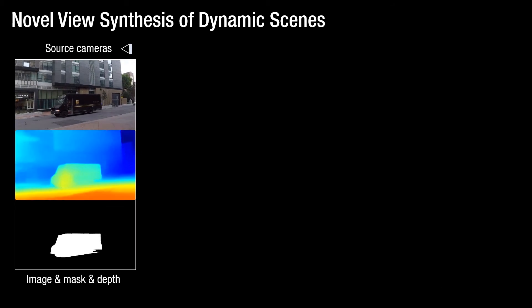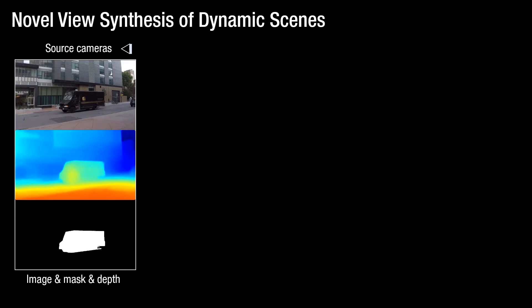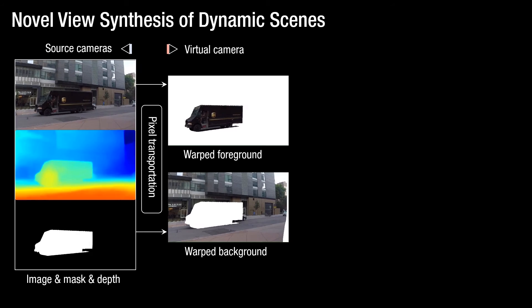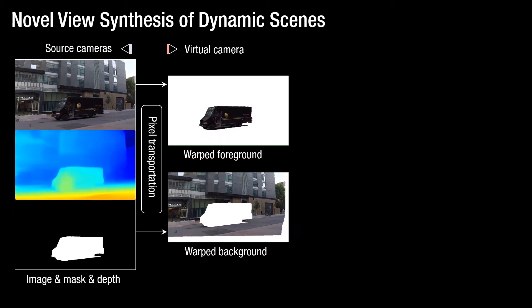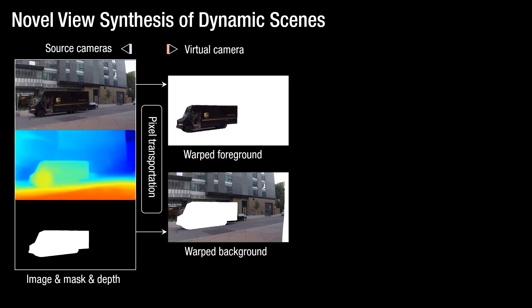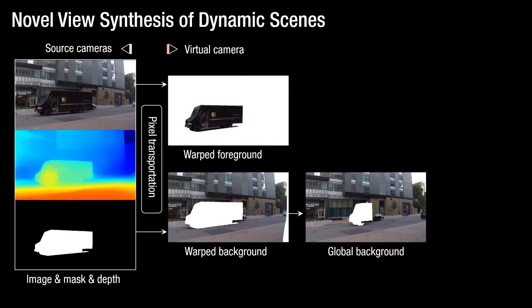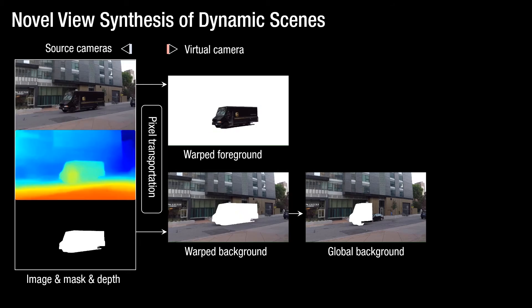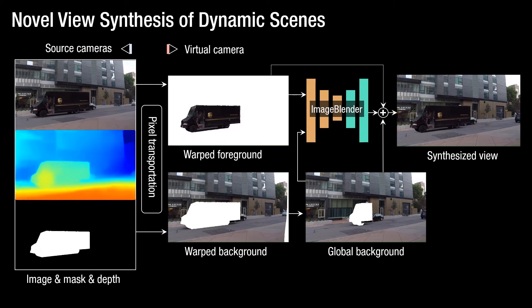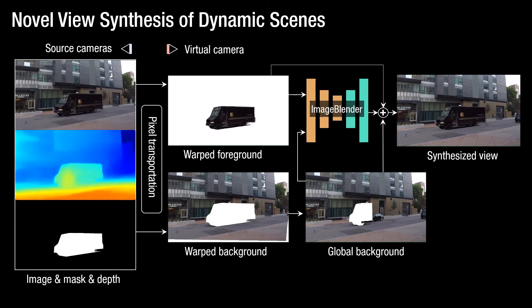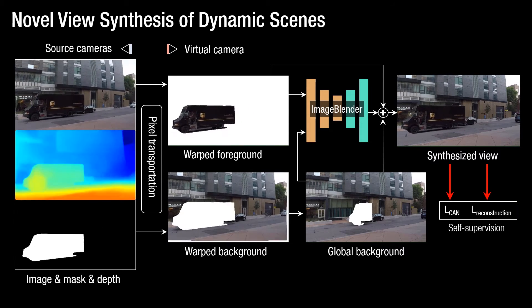Given images, depth maps, and foreground masks, we synthesize a photorealistic virtual view at a specific location and time. We transport the pixels from source cameras to the virtual view by separately warping the foreground and background. The global background is reconstructed by merging the background pixels from all views based on the camera baseline. Finally, the image blending network generates the blending residue to refine and complete the synthesized image. The image blending network is trained with adversarial loss in a self-supervised way.